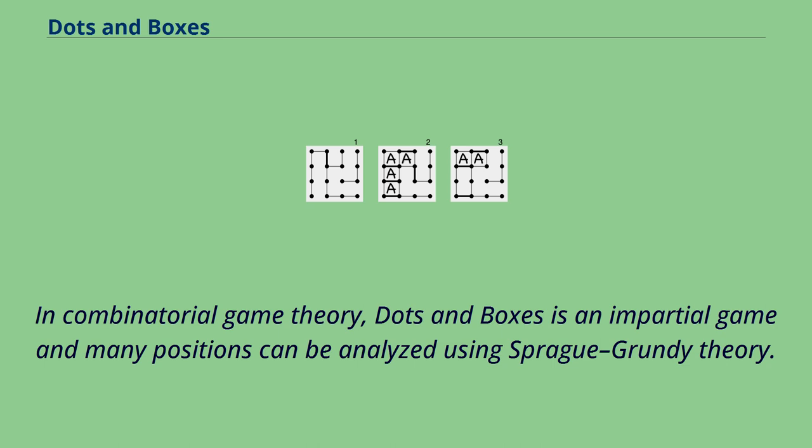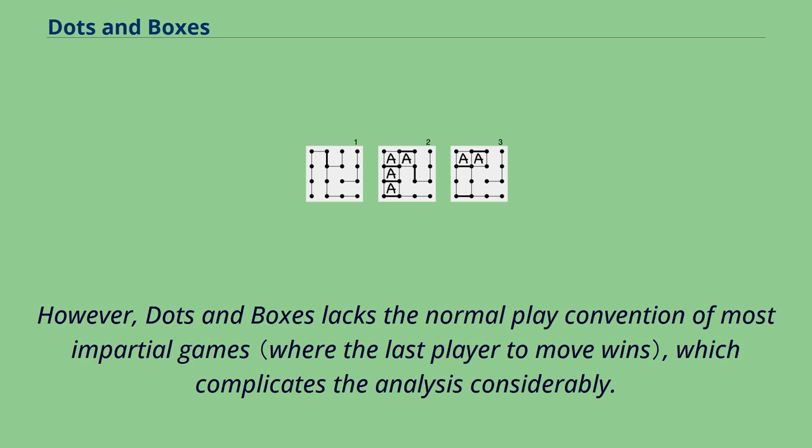In combinatorial game theory, dots and boxes is an impartial game and many positions can be analyzed using Sprague-Grundy theory. However, dots and boxes lacks the normal play convention of most impartial games, which complicates the analysis considerably.